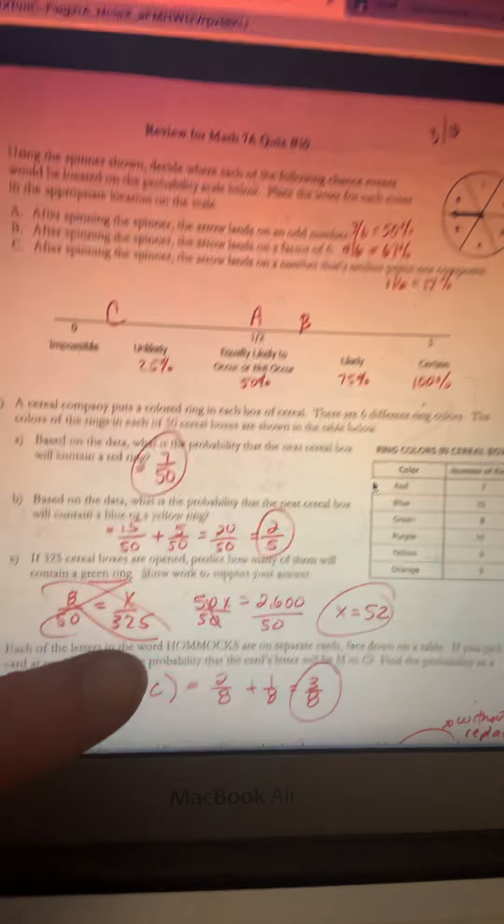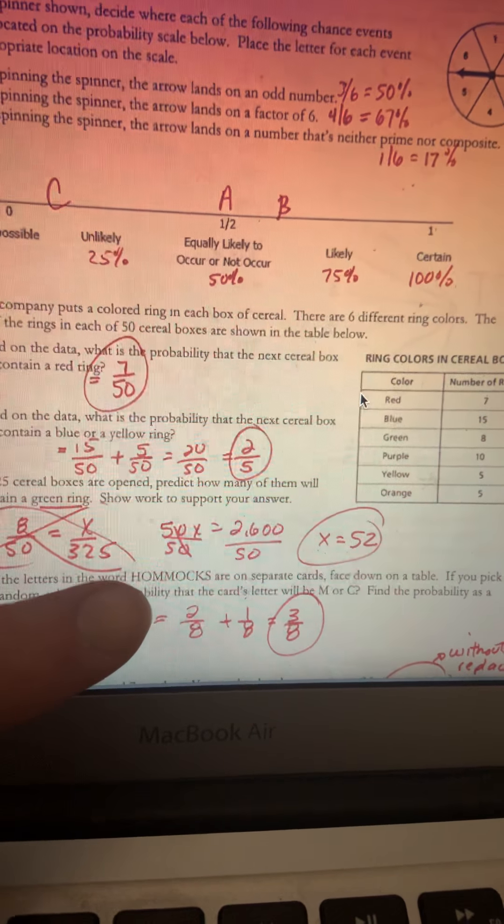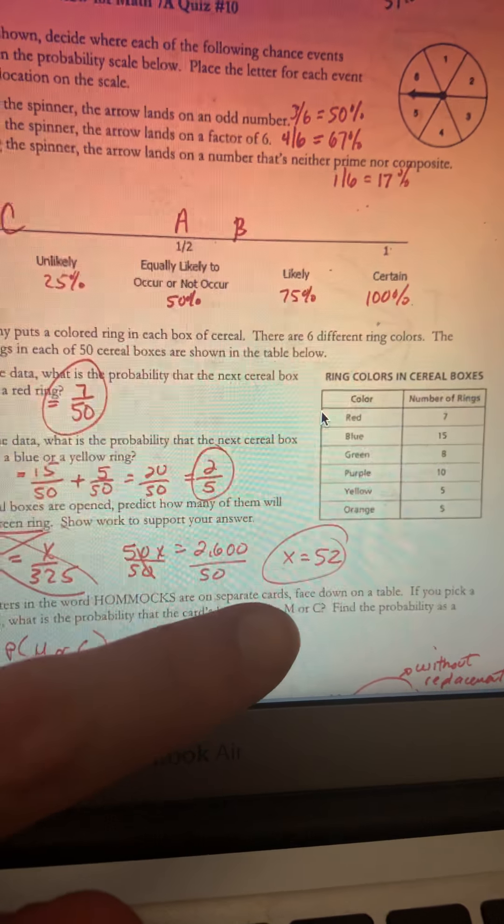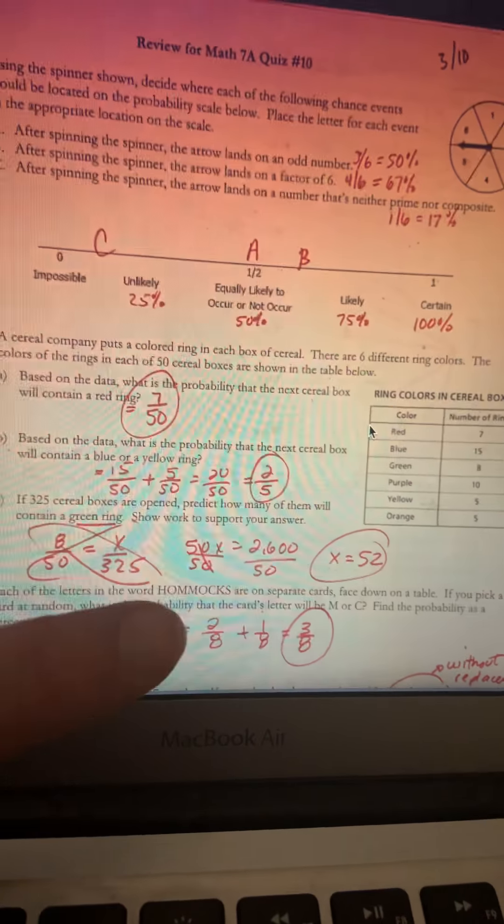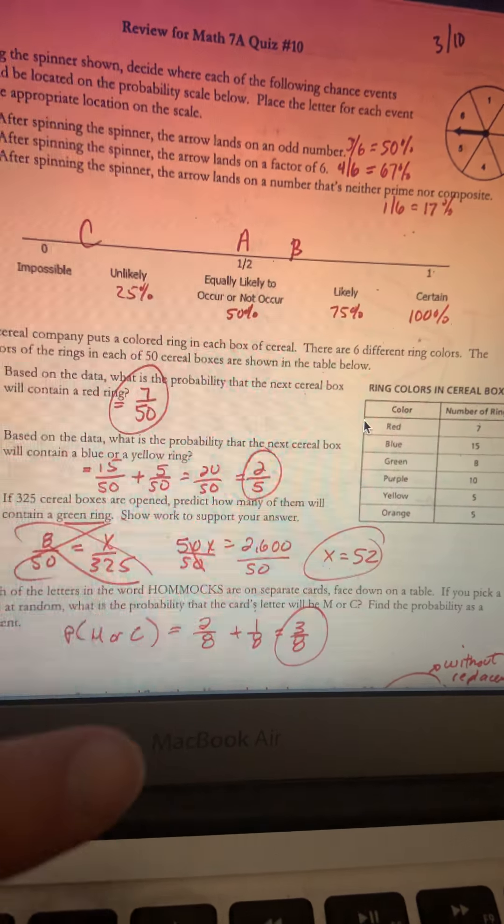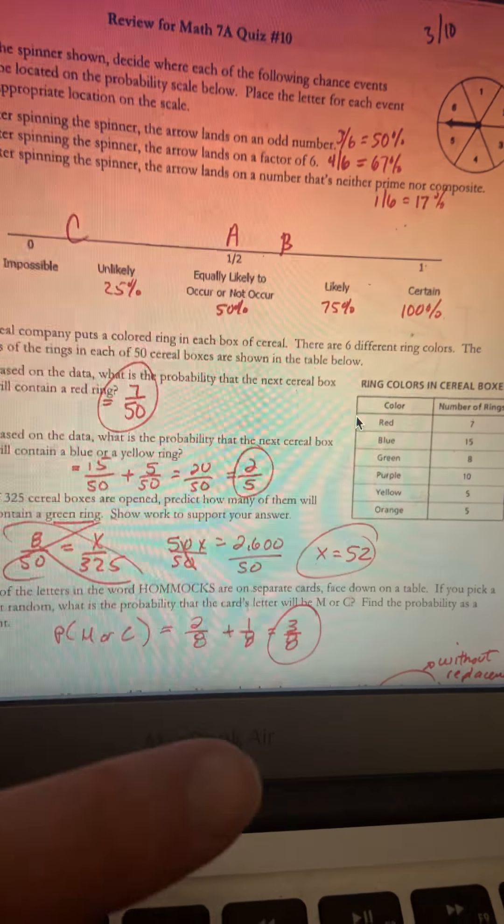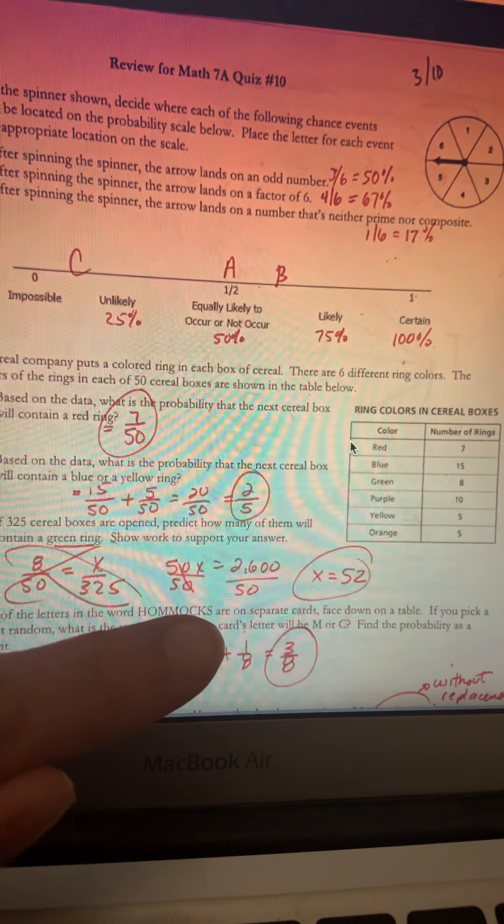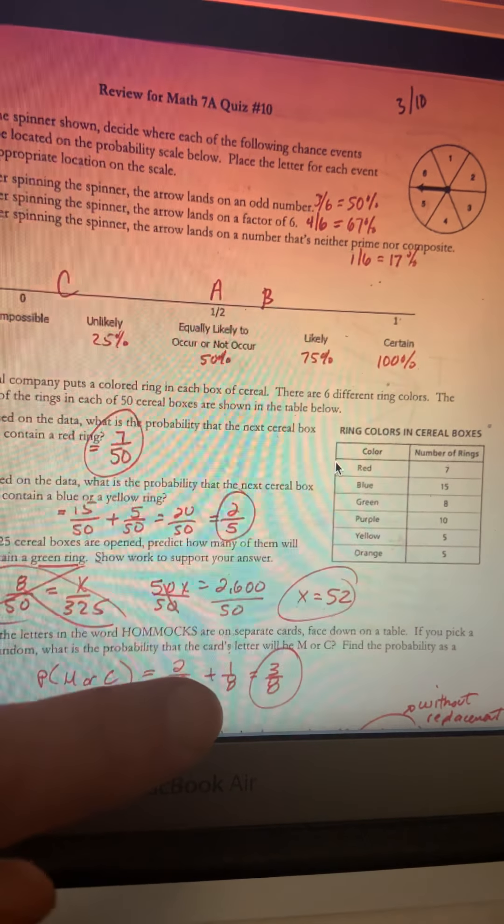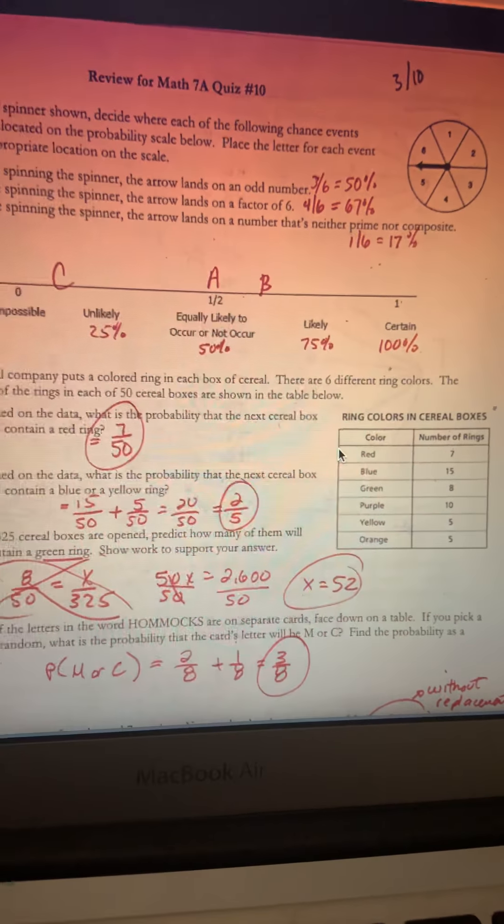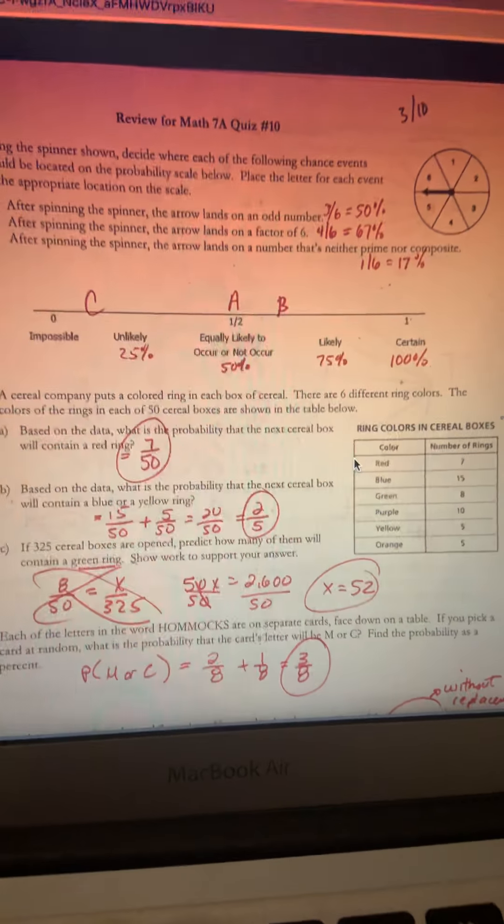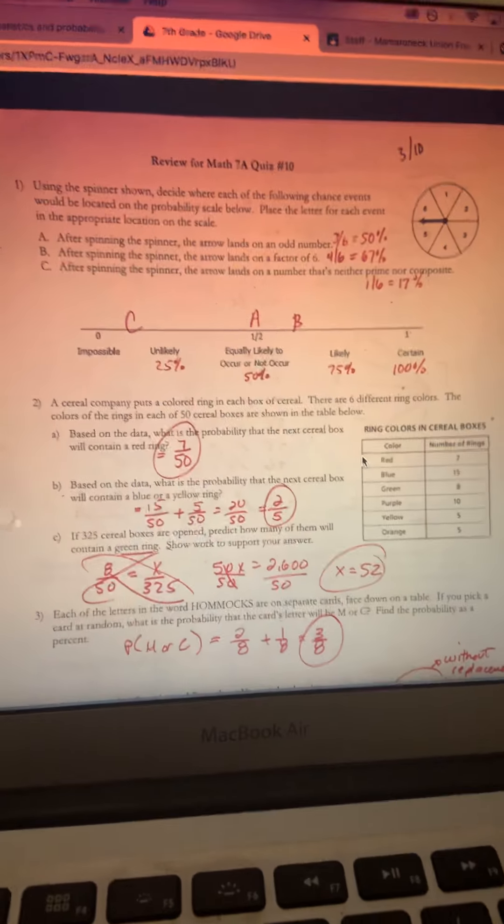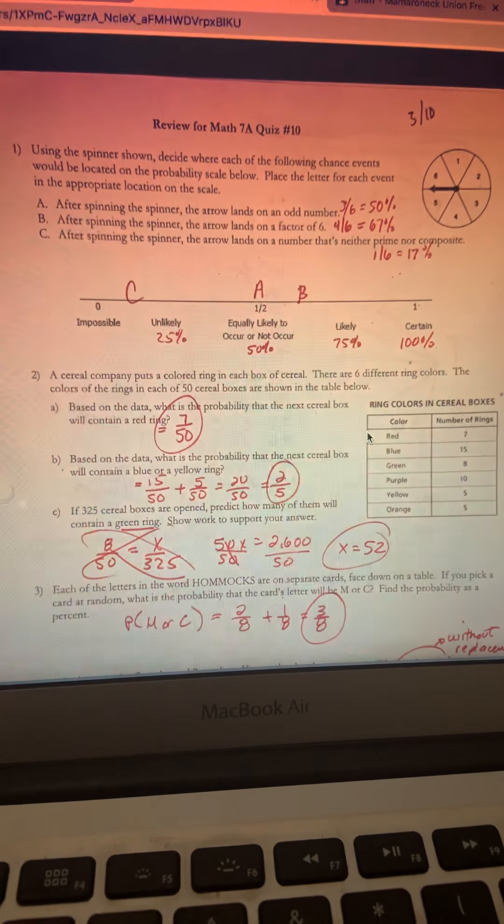The last question on this page: if you have the word HOMMOCKS (H-O-M-M-O-C-K-S), what's the probability of an M or a C? For M, there are two M's, so two out of eight. It says 'or' so we're adding. For C, there's only one C, so one out of eight. If I add those probabilities, it is three out of eight. First page done. I'm going to post this video so it doesn't get too big, and I'll post a different video for the next page.